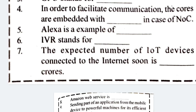Number seven: the expected number of IoT devices connected to the internet soon — I think it is two billion or something like that. I already gave that answer in the exercise answers, you can see it from there.